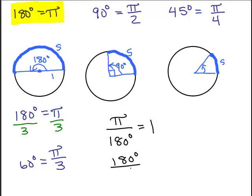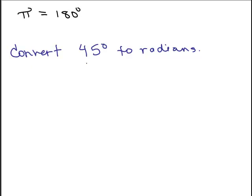I could also write 180 degrees over π, because again, 180 degrees is the same thing as π, so that is equal to 1. So what I have is that these are what I call conversion factors here. You could take anything and multiply by π over 180 degrees or 180 degrees over π to convert from radians to degrees or degrees to radians. So the question is, how do you know which one to use?